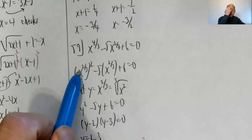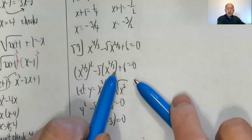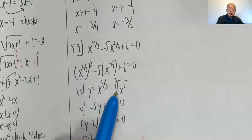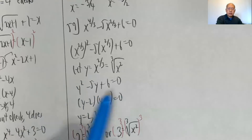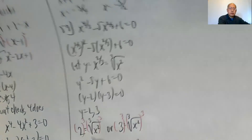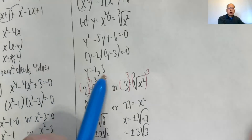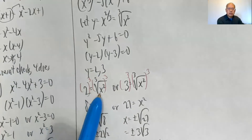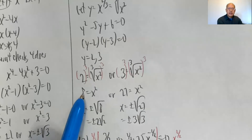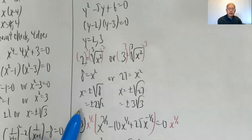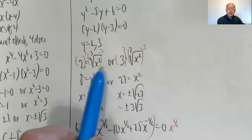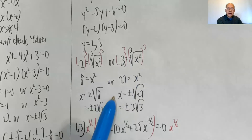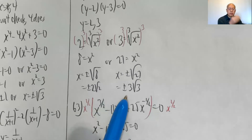Problem fifty-nine: treat it as x to the two thirds squared minus five x to the two thirds plus six equals zero. Let y equal x to the two thirds, which means the cube root of x squared. So y squared minus five y plus six equals zero, factoring into y minus two times y minus three equals zero, giving y equals two or three. Plugging back in: two equals cube root of x squared, cube both sides to get x squared equals eight, so x is plus or minus two radical two. Similarly, three gives x squared equals twenty-seven, so x is plus or minus three radical three.